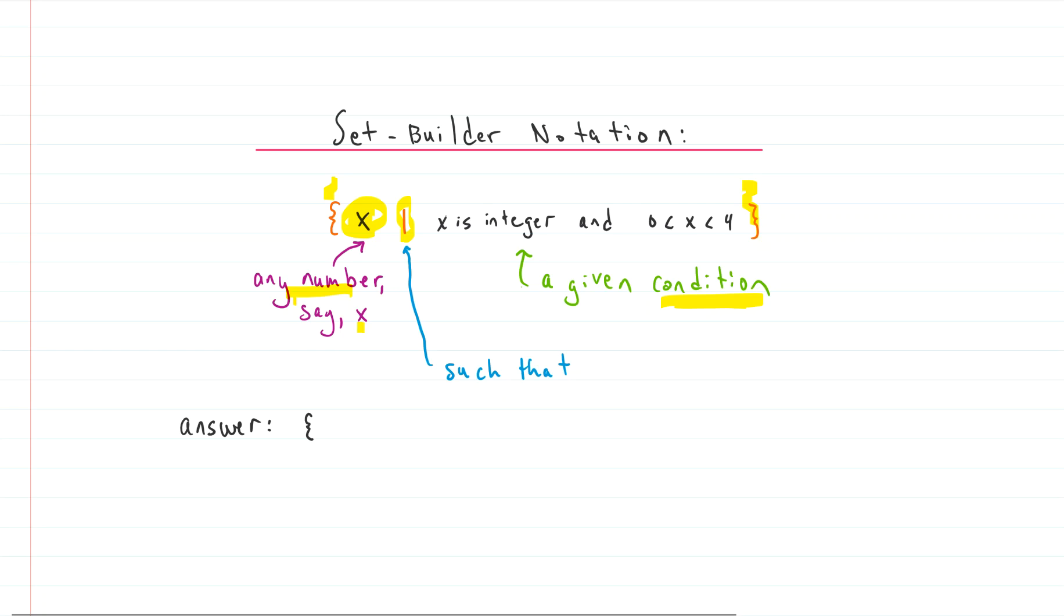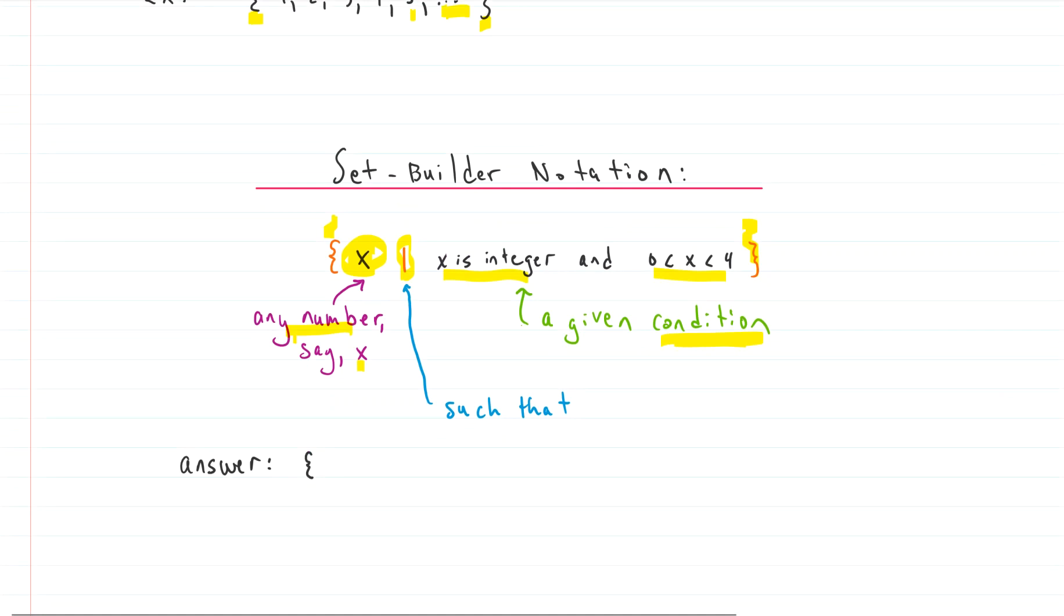Our condition here that I just made up is any number that is an integer and is between 0 and 4. So what would this set look like? Here we can write it out. Well, it must be an integer and it must be between 0 and 4, bigger than 0, less than 4. So that leaves us with 1, 2, and 3, and that's it.